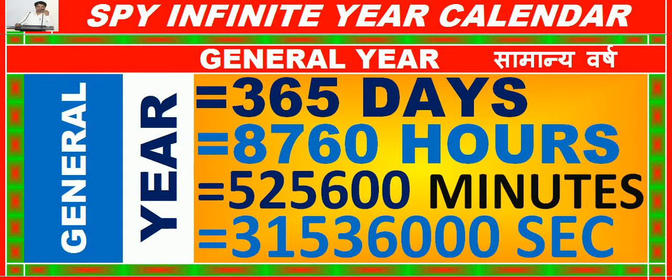A general year is equal to 365 days, or 8,760 hours, or 5,25,600 minutes, or 3 crore 15,36,000 seconds.